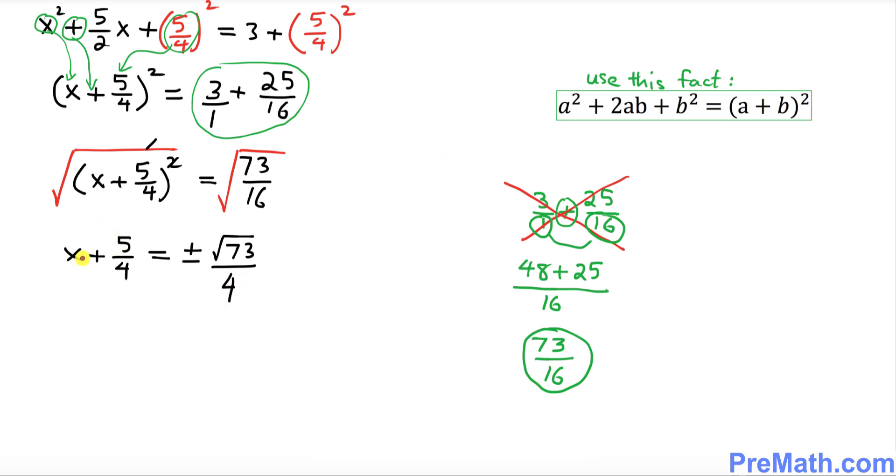Now we want to isolate x, so this positive 5/4 must go to the other side. x is going to be, when you move 5/4 to the other side, -5/4 ± √73/4.